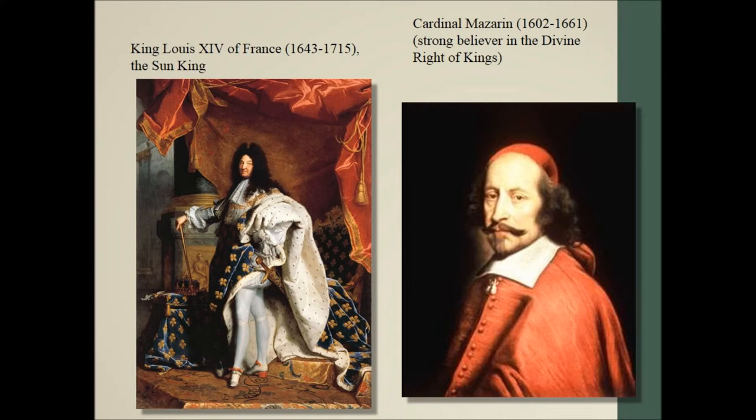The next king I want to talk about is probably one of the more famous French kings: Louis XIV, also known as the Sun King, because the sun provides life for everything, and that's how he saw himself. Richelieu ends up dying, and then Louis XIV's father dies in 1643. Louis XIV becomes king when he is five years old. Obviously that's too young to rule, so his mother appointed another cardinal: Cardinal Mazarin. He certainly believed in the divine right of kings, and that's what he taught Louis XIV the whole time he was growing up.